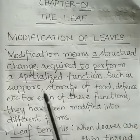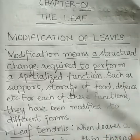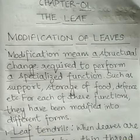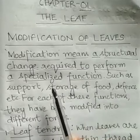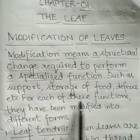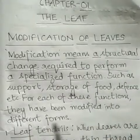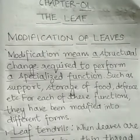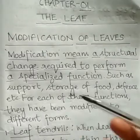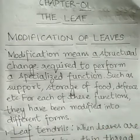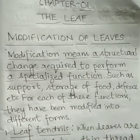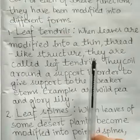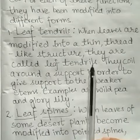Plants modify themselves to get support, to store food, and to get defense from their enemies. For each of these functions, leaves have been modified into different forms like tendrils, spines, and scale leaves. Let us study each one by one.